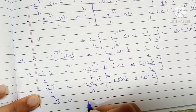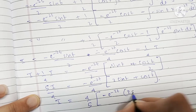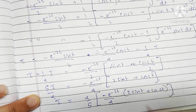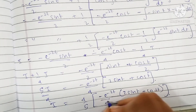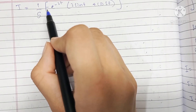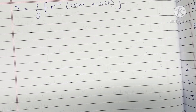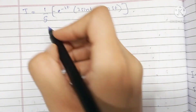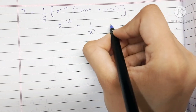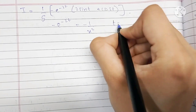So the final value of i is equal to 4 by 5 times minus e raised to minus 2t times the quantity 2 sine t plus cos t, all over 4. The 4 cancels, giving i equal to minus 1 by 5 times e raised to minus 2t times the quantity 2 sine t plus cos t. Now let's write these terms in terms of x: e raised to minus 2t was 1 over x squared, so minus e raised to minus 2t is minus 1 over x squared, and t was log x.